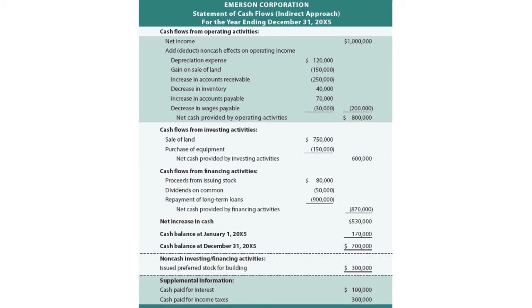Lastly, when you present an indirect approach, there's one additional disclosure requirement in the United States. You have to supplement your indirect approach with cash paid for interest and cash paid for taxes. Essentially those are direct approach presentations of the amounts paid for interest and taxes, supplemental to the primary cash flow information.